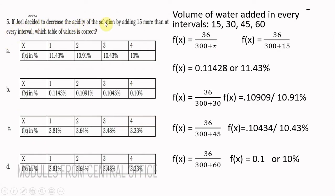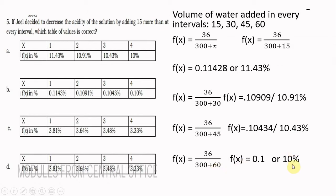For number 5, Joel decreases acidity by adding water in intervals of 15 ml: 15, 30, 45, and 60. Using the function f(x) = 36 over (300 plus x), substituting x = 15 gives 11.43%, x = 30 gives 10.91%, x = 45 gives 10.43%, and x = 60 gives 10%. The answer is letter A.